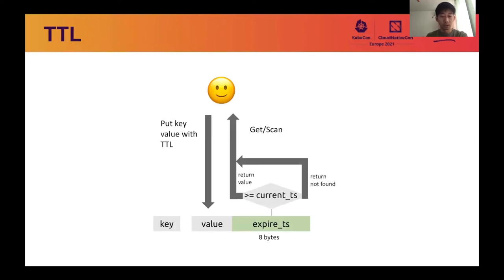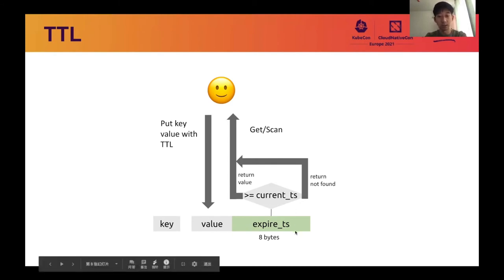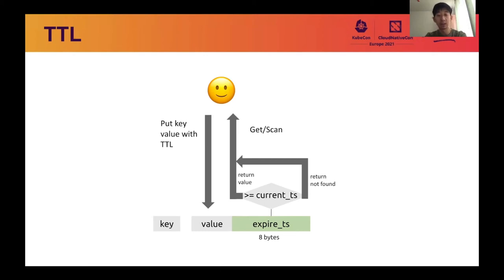Here comes the first question: where to put the TTL information? There is no metadata for a key, so it is just appended as 8 bytes to the value. When writing with TTL, TiKV calculates the desired expiry Unix timestamp by adding TTL to the current Unix timestamp. And when reading the key, TiKV checks the expiry timestamp to see if the current timestamp exceeds it. If yes, it returns not found, just like the key is deleted. Otherwise, it returns the value with the timestamp stripped.